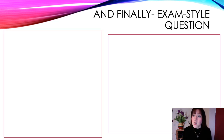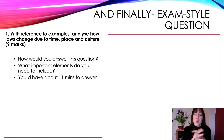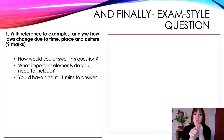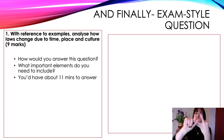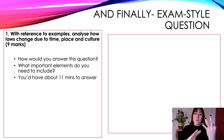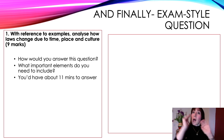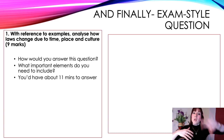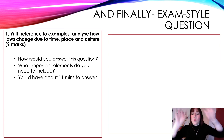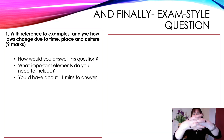Finally, an exam-style question — this is a nine marker. With reference to examples, analyse how laws change over time, place, and culture. When you break it down, it's just three marks for each: three for time, three for place, three for culture. For time, explain how laws changed and give an example — that's your three marks. Do the same for place and culture. For example, in the previous 1.1 question on crime and deviance worth six marks, it was three for crime and three for deviance — what are they, give an example, analyse or compare them.